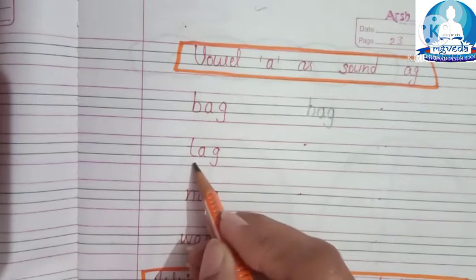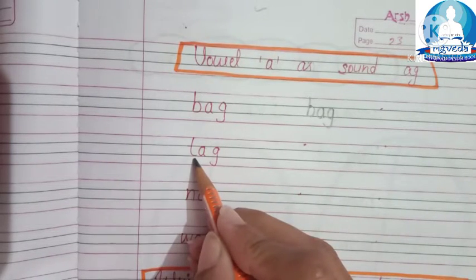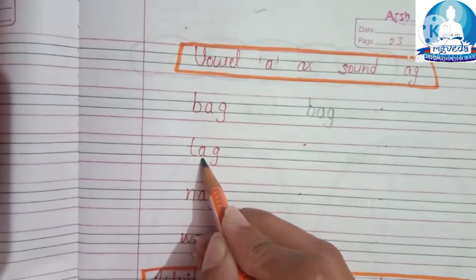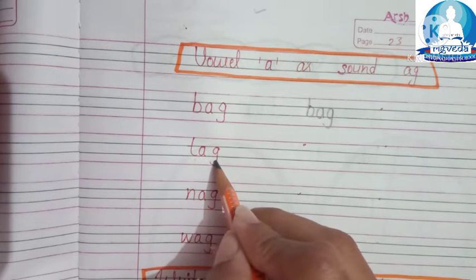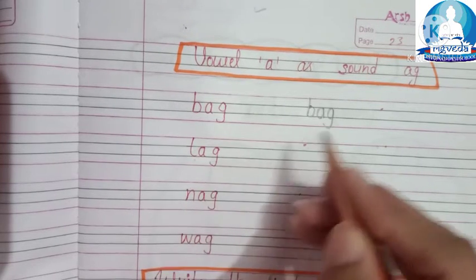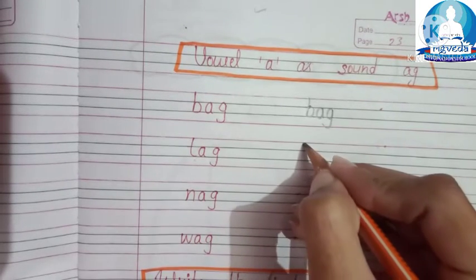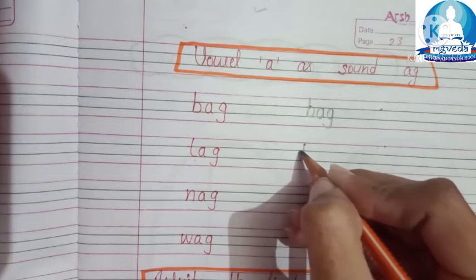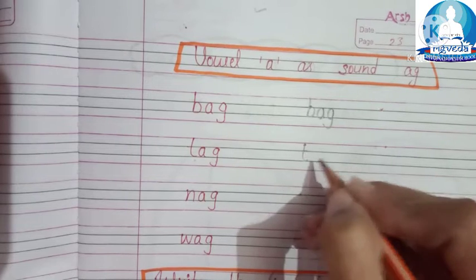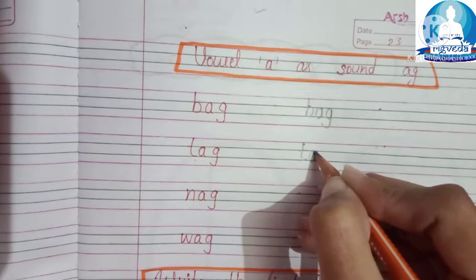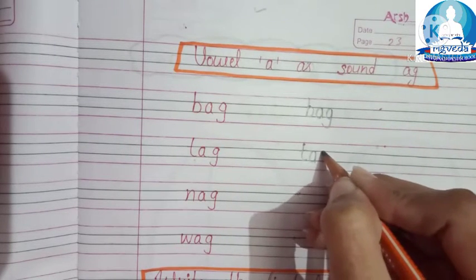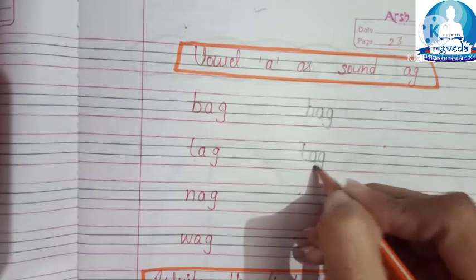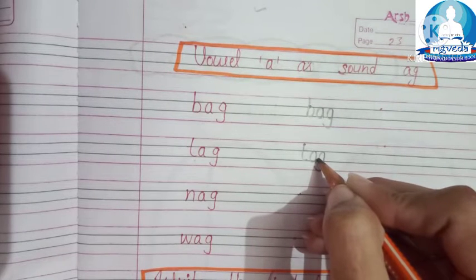Next is T, A, G, tag. Write and speak after me. T, A, G, tag.